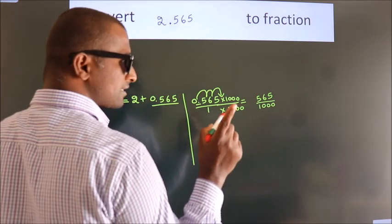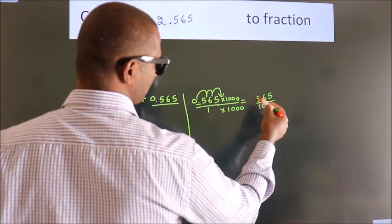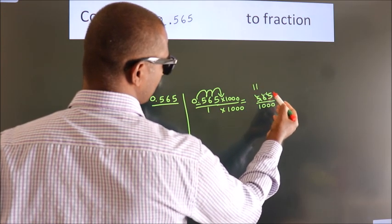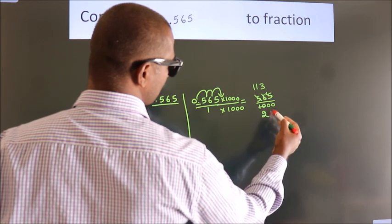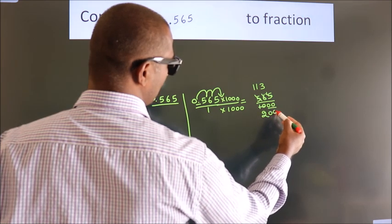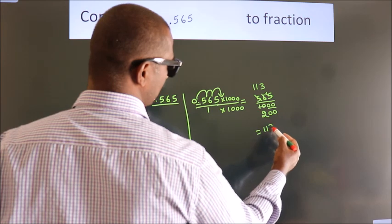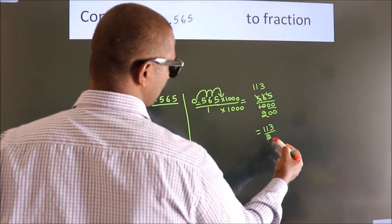Now I cancel with 5. 5 1's, 5 1's, 5 3's, 5 2's, this 0's as it is down. So the fraction we got is 113 by 200.